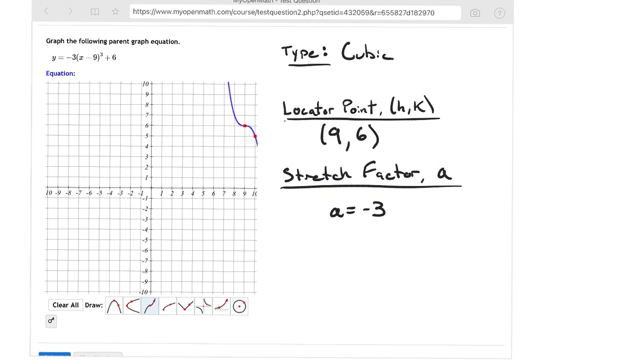So let's see if I can get that to stick here. There we go. So 9, 6 is that locator point. That stretch factor is a negative 3, and that would be your cubic function.